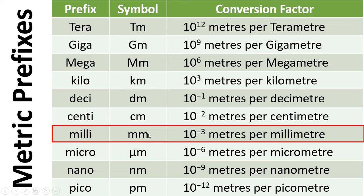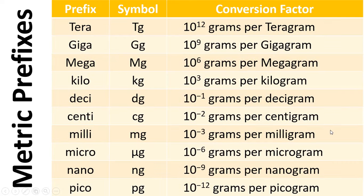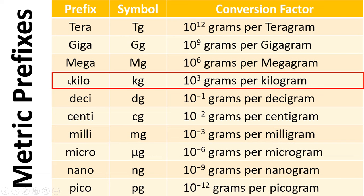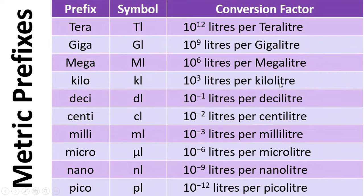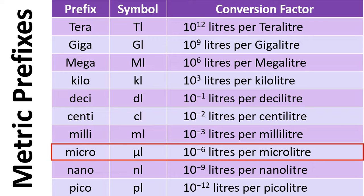If we go to the millimetre one, it's 10 to the minus 3 metres per millimetre. We can do this for other units as well, so for example kilograms. And we can also do this for volume, so here we have litres. And if we have a microlitre, then it's 10 to the minus 6 litres per microlitre.